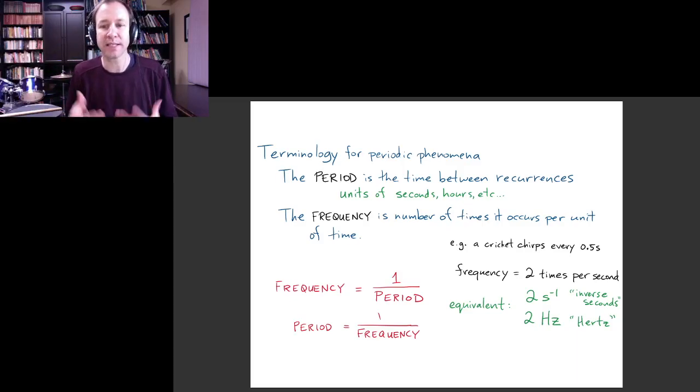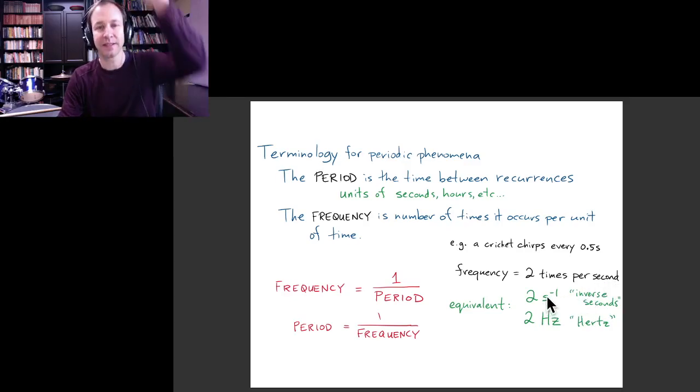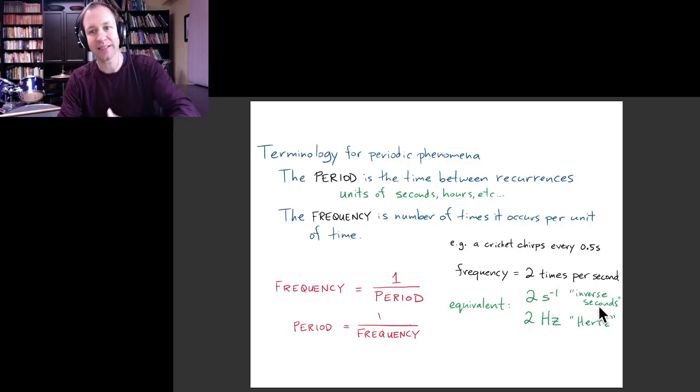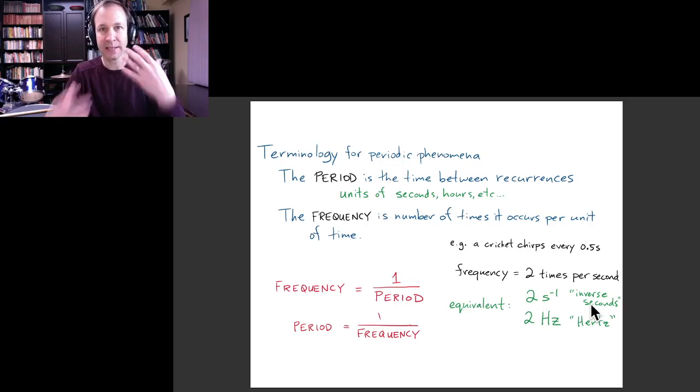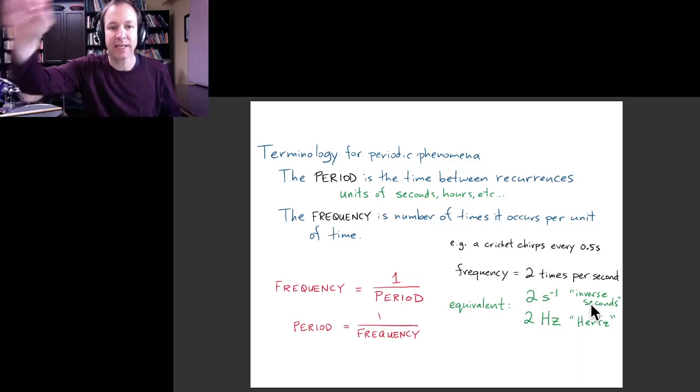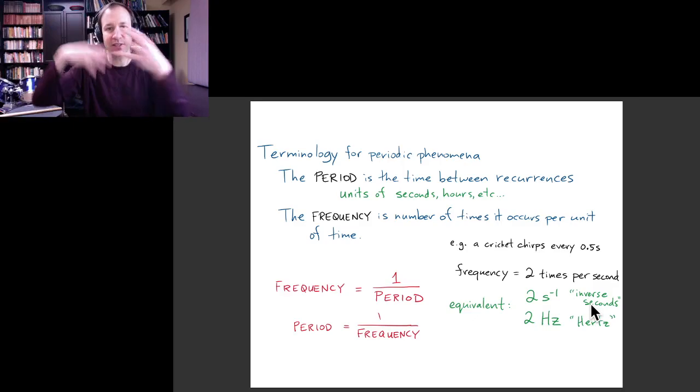In this case, the period is 0.5 seconds and the frequency is twice per second. In physics, we often write this per second in shorthand notation as seconds to the minus one, which indicates that per second is like inverse seconds. Or sometimes you'll see the notation hertz, and so hertz also is the same thing as inverse seconds, which is the same thing as times per second.